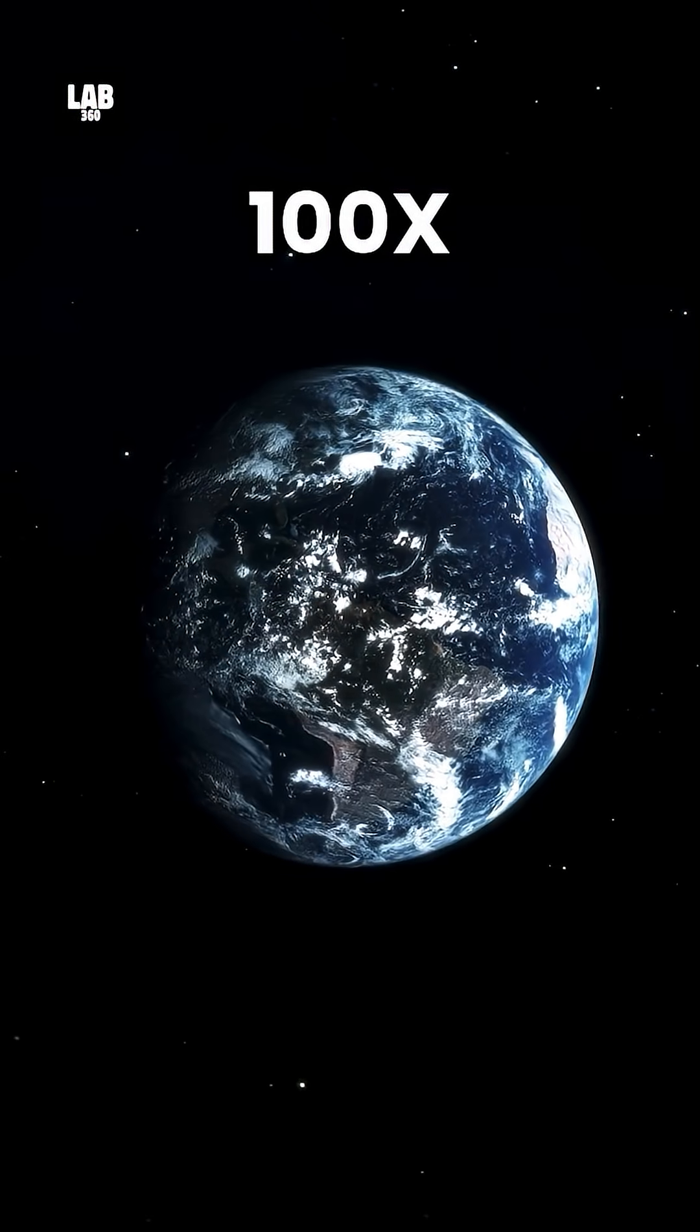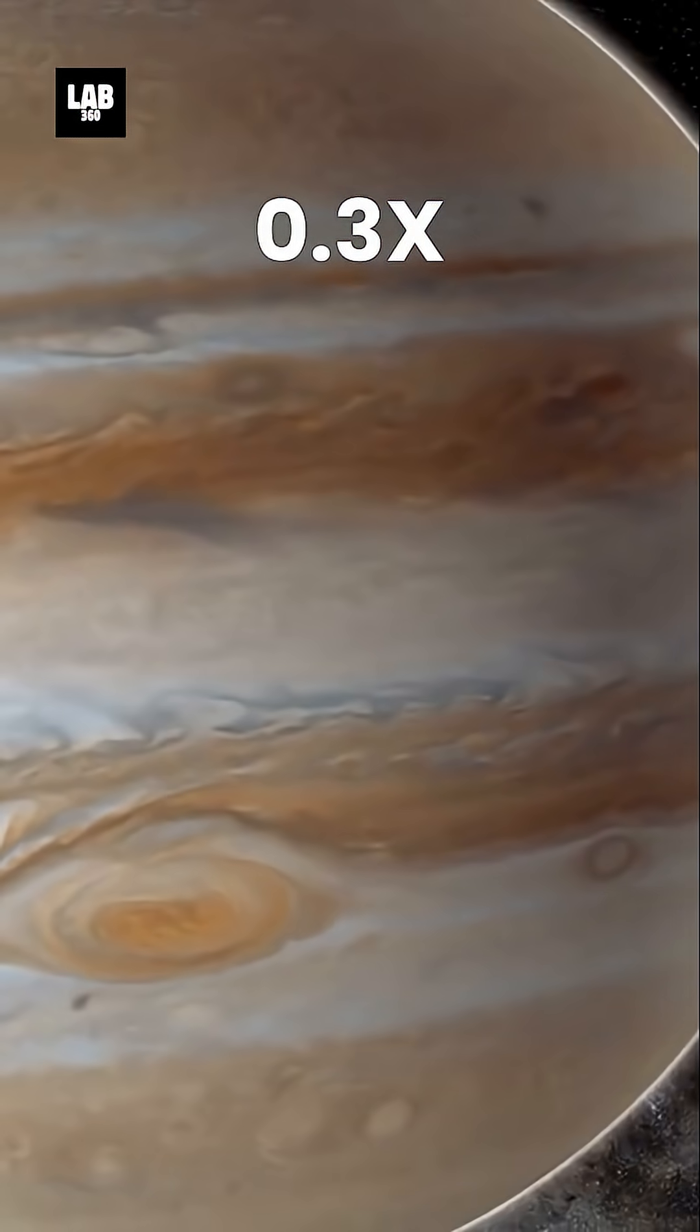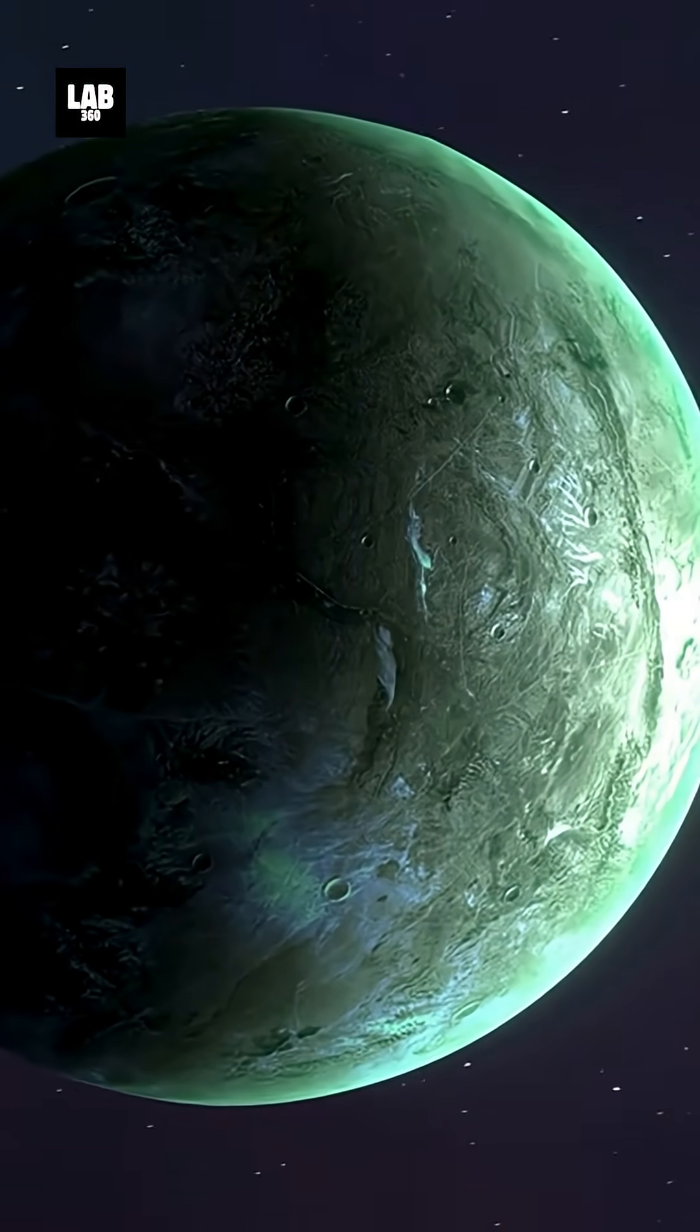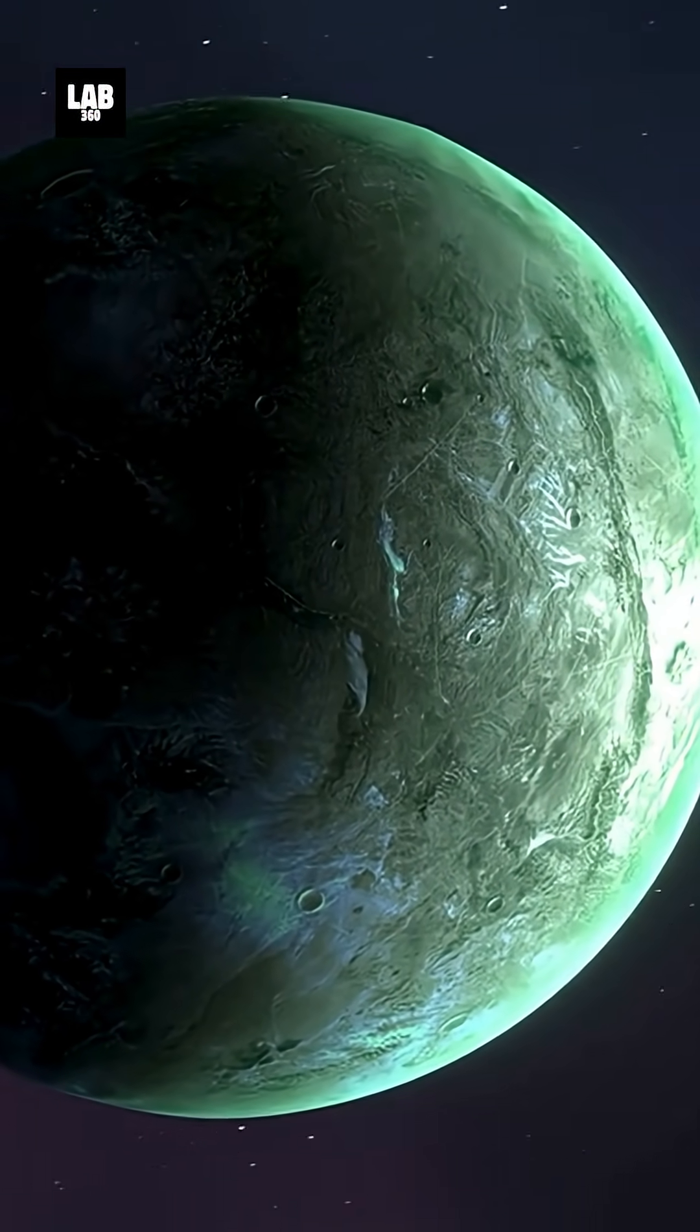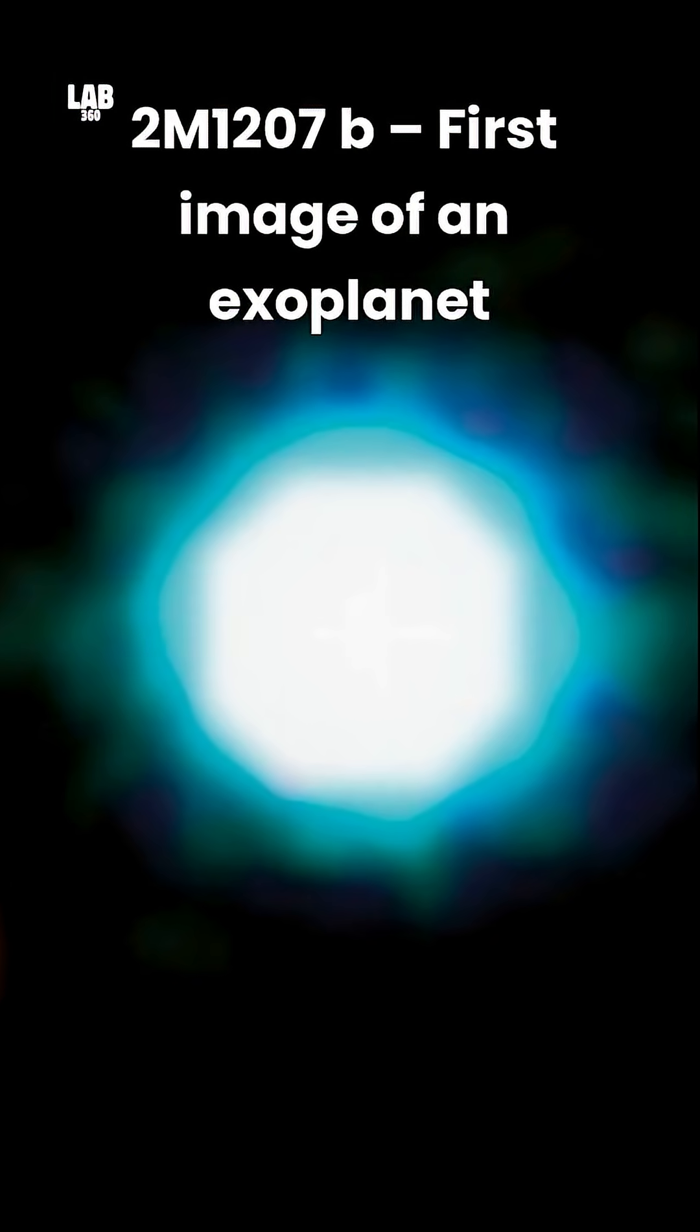Estimated to be about 100 times the mass of Earth, or roughly 0.3 times the mass of Jupiter, TWA-7b is 10 times less massive than any exoplanet previously captured through direct imaging.